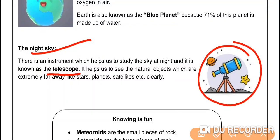With the help of this telescope, we can see the natural objects which are very far away. What are the natural objects? Like other stars, there are planets - apart from Earth, there are other seven planets - there are satellites, and it helps us to see all these natural objects clearly.